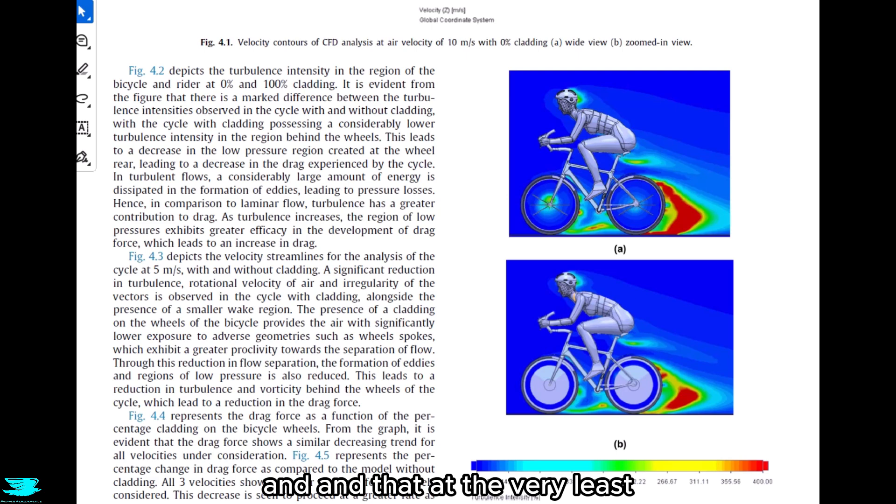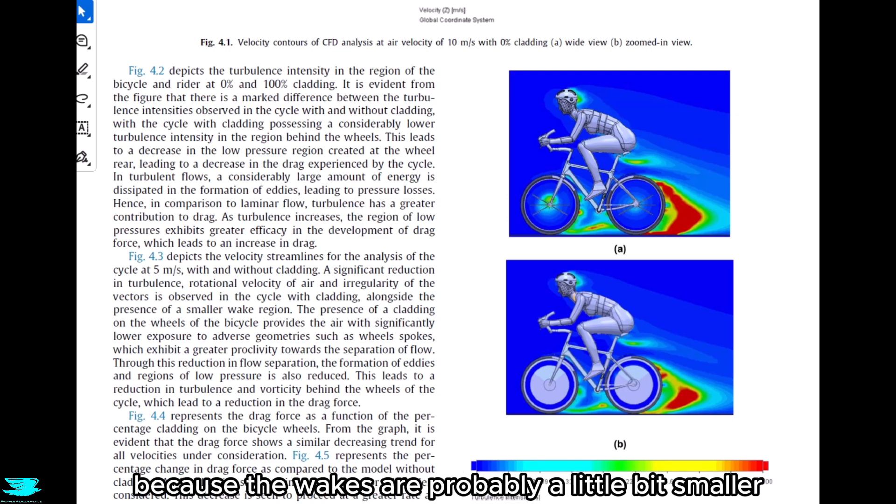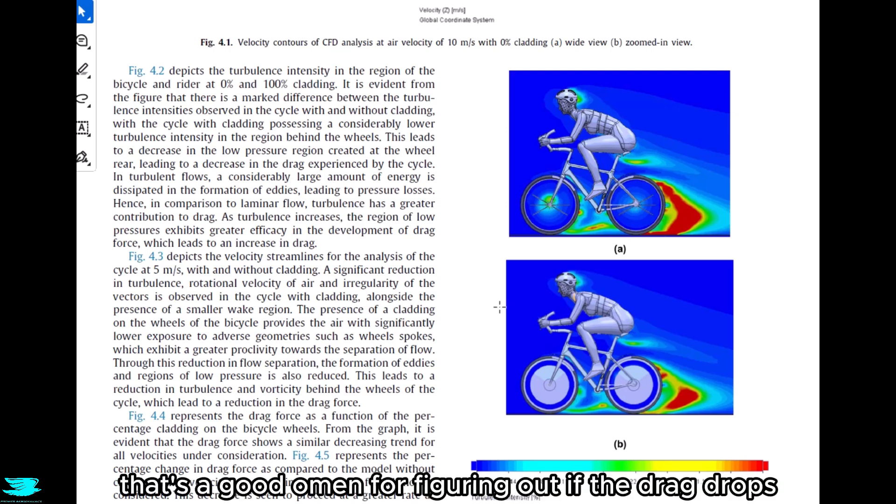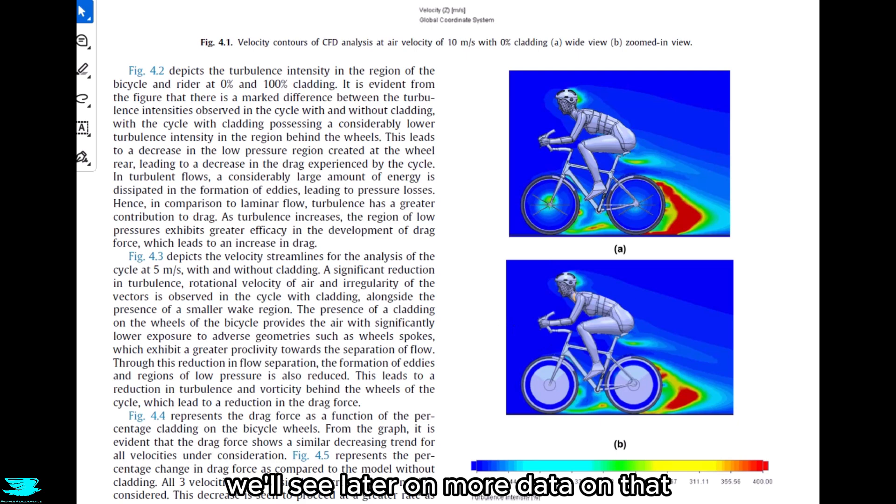That suggests that the bike with 80% cladding, or at least the wheel, isn't slicing and dicing through the air as efficiently as the bike without cladding. And that, at the very least, would probably mean that the bottom wheels are reducing the vortex drag of the wheel because the wakes are probably a little bit smaller, it seems, at least the turbulence is. So that's a good omen for figuring out if the drag drops, but we'll see later on more data on that.